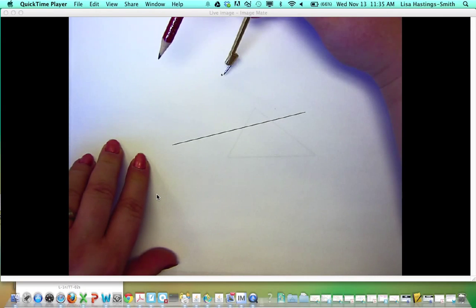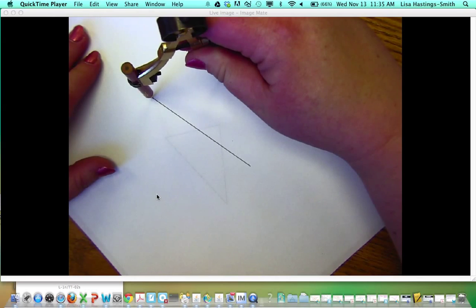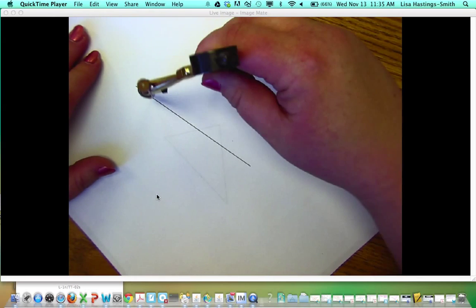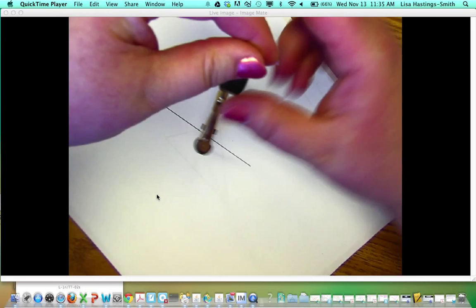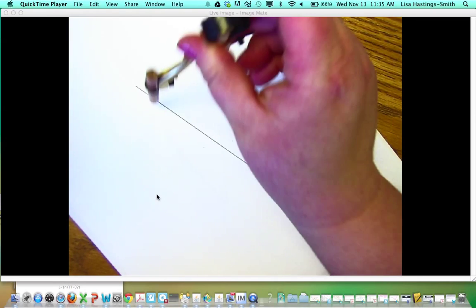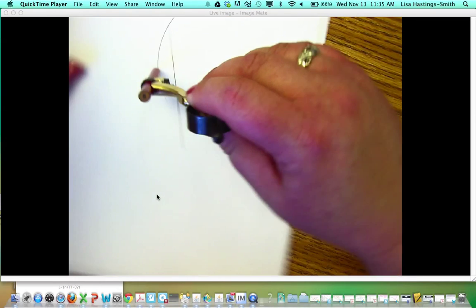So that starts with, put the tip of the compass on the point. Make sure that your compass is open enough that when you swing it, it will hit the line, the segment in two places. So I'm going to make an arc like this.